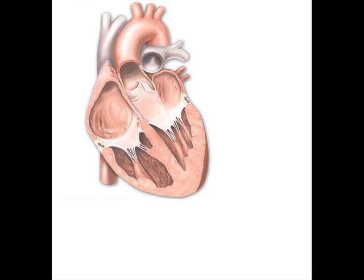Oxygen-deprived blood enters the right atrium of the heart and flows into the right ventricle, where it is pumped through the pulmonary arteries to the lungs. Pulmonary veins return the now oxygen-rich blood to the heart, where it enters the left atrium before flowing into the left ventricle. From the left ventricle, the oxygen-rich blood is pumped out via the aorta and onto the rest of the body.